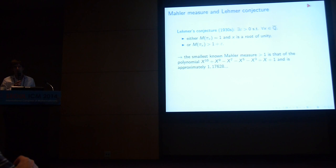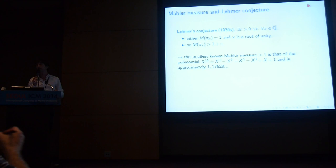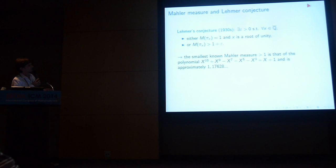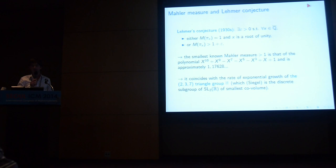The smallest known Mahler measure bigger than 1 is that of a degree-10 polynomial, sometimes called the Lehmer polynomial, and it is approximately 1.17. There is a remarkable coincidence: this Mahler measure coincides with the growth rate of the 2-3-7 hyperbolic triangle group — the group generated by reflections around a triangle in the hyperbolic plane with angles π/2, π/3, and π/7.